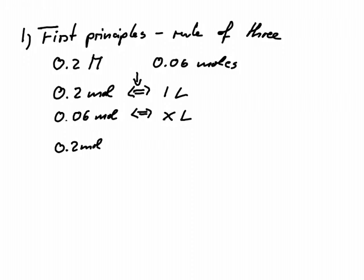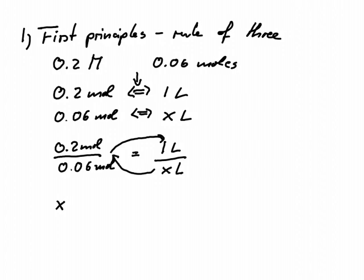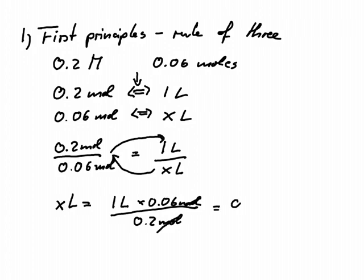With those two equations we can convert them into a ratio: 0.2 mole divided by 0.06 mole equals one liter divided by the unknown quantity x liters. Rearranging, we get x liters equals 1 liter times 0.06 mole divided by 0.2 mole. The moles cancel out and we get 0.3 liters — that's how much solution we need.